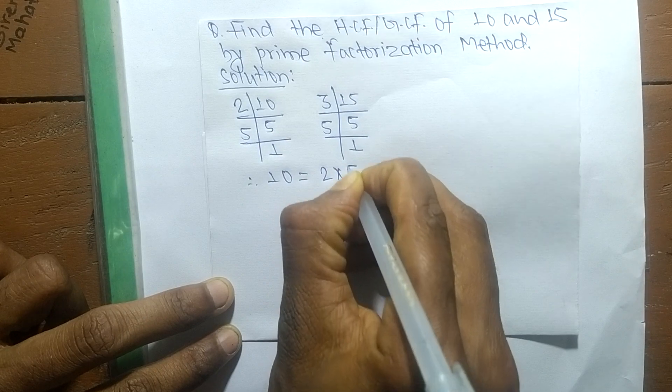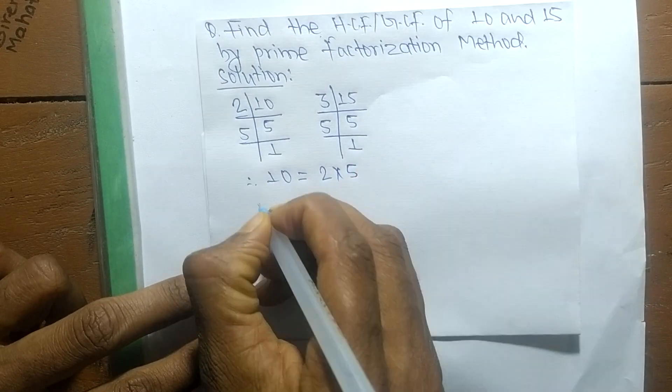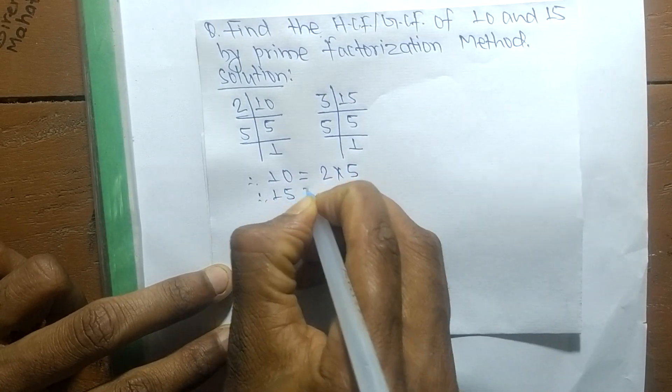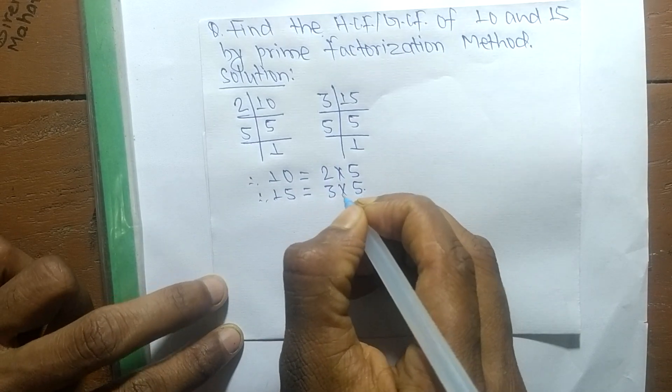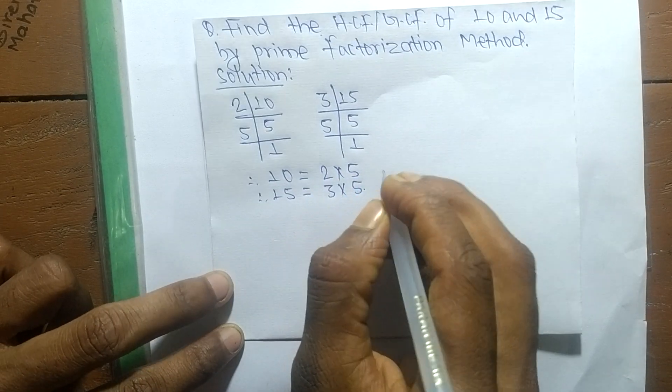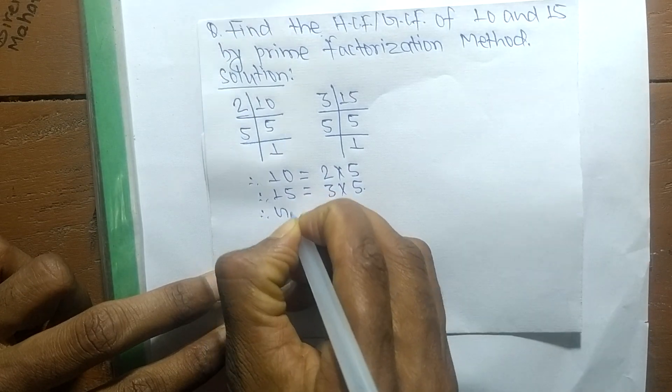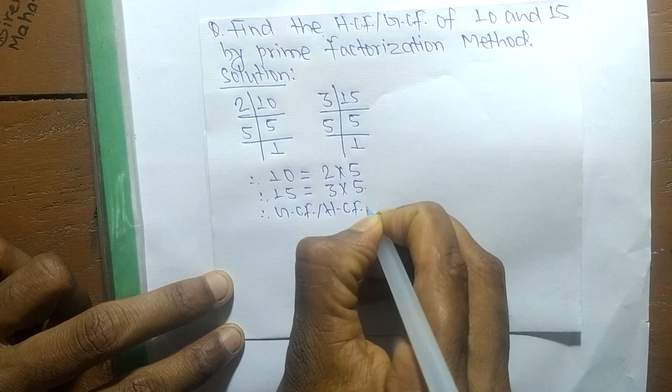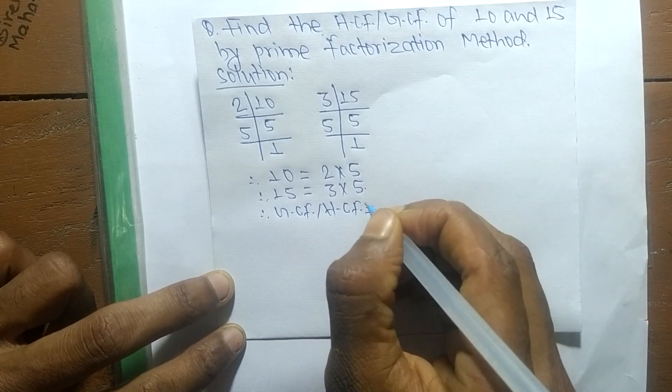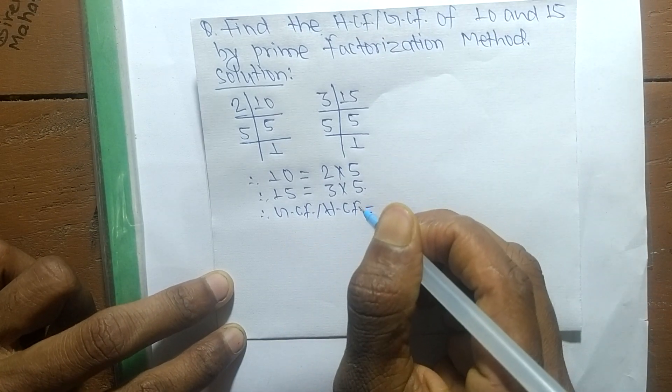10 is equal to 2 into 5, and 15 is equal to 3 into 5. After finding the prime factors, we now find the GCF or HCF, which is the product of all the common factors.